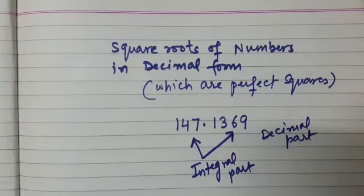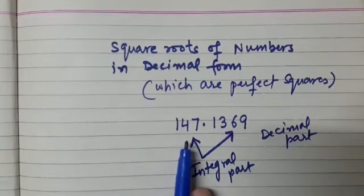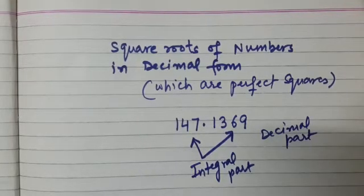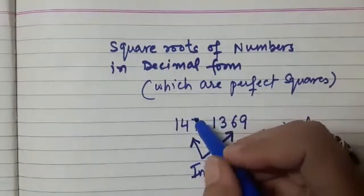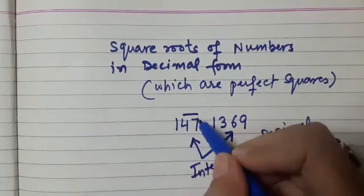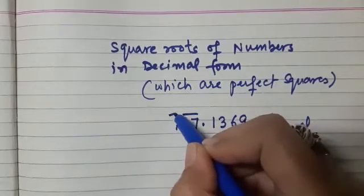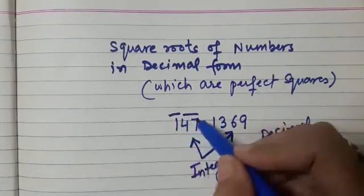So we have to now learn how do we make pairs of numbers before the decimal part and after the decimal part. So before the decimal part, as you used to find the square root of a number using long division method, we have to follow the same process. So we used to mark periods from the unit digits. So we have marked 47 and 1. So these are the two periods.